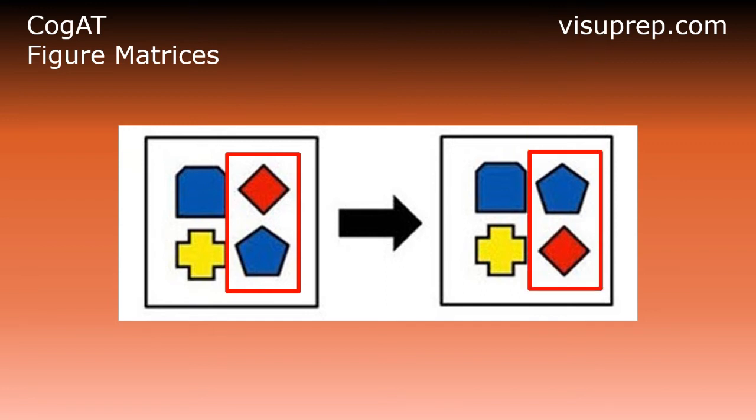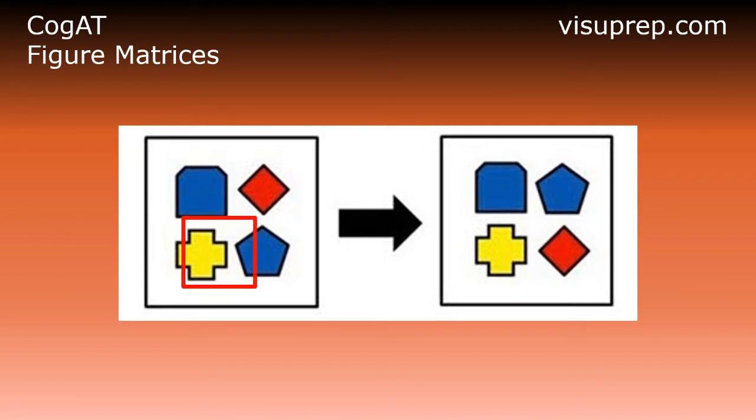Looking at the second column of both boxes, we can see that the order of the shapes has been reversed. The top shape of box 1 becomes the bottom shape of box 2, and the bottom shape of box 1 becomes the top shape of box 2.